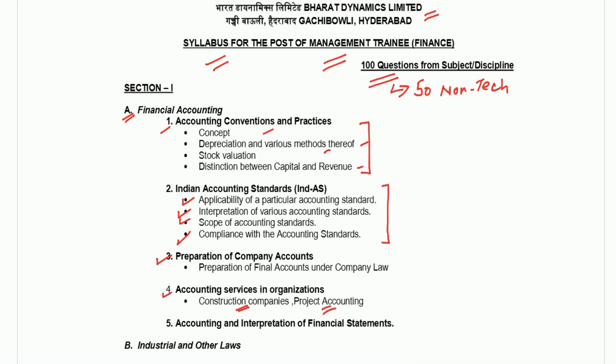Part 4 is related to accounting services in organizations and they have specifically mentioned construction companies and project accounting. Part 5 under financial accounting is related to accounting and interpretation of financial statements. Out of these, you should really practice accounting convention and practices, and also prepare Ind AS. Since Ind AS is relatively new compared to accounting standards, you need basic knowledge of Ind AS — applicability, scope, and the numbering of Ind AS. For example, revenue standard pertains to Ind AS 115.